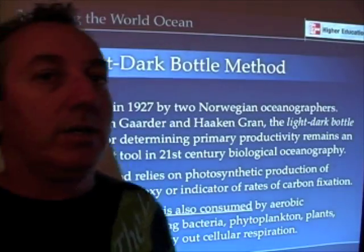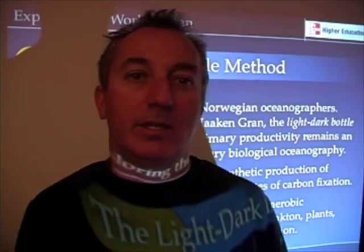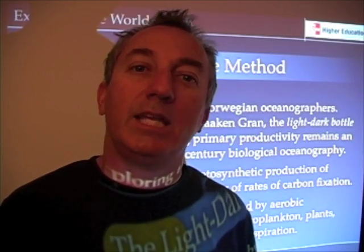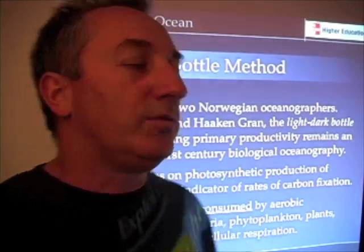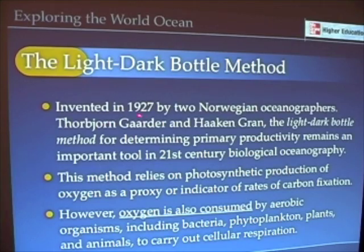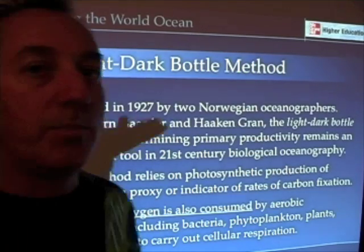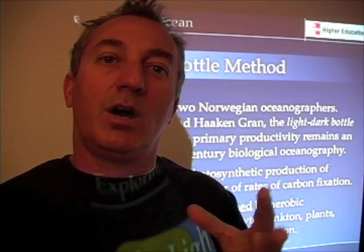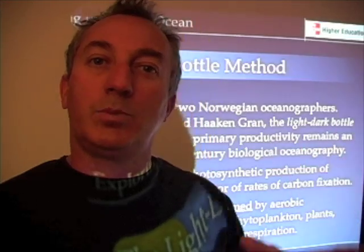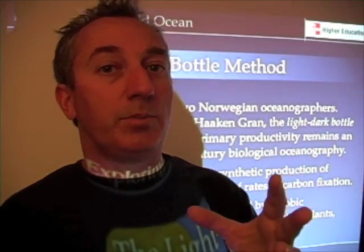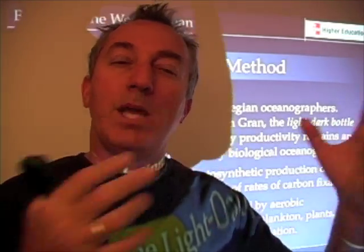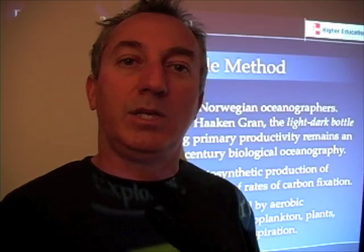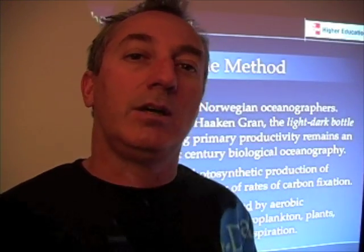Here's where we jump into a topic that is probably most commonly taught when we talk about biological oceanography. That would be the light-dark-bottle method, invented by two very smart Norwegian oceanographers in 1927. This method relies on oxygen — the light reactions are the ones that produce oxygen by splitting water apart, so oxygen is a byproduct of photosynthesis. If we measure how much oxygen is being produced, we have some idea of how much carbon is being fixed and how fast rates of primary productivity are in the ocean.